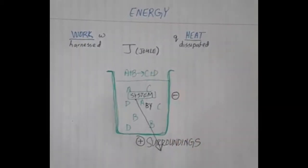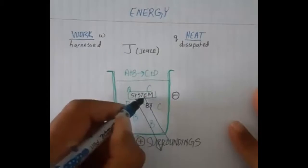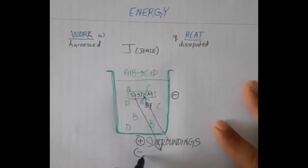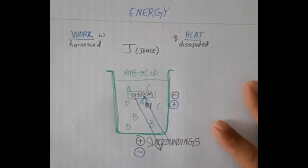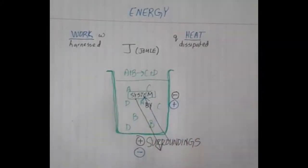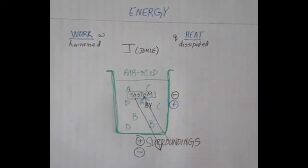The surroundings will have an equal value but opposite in sign — positive. So work done by the system on the surroundings: negative value for the system, positive value for the surroundings. We can flip the script: if the surroundings do work on the system, something is pushing the reaction forward. That means the surroundings are negative and the system is positive. That covers the exchange of work between system and surroundings.